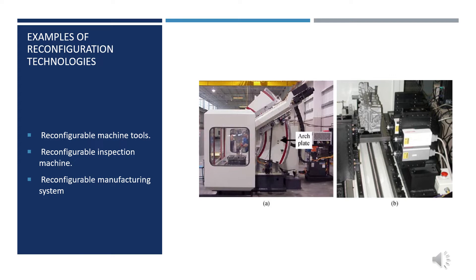Reconfigurable inspection machines (RMI) represent a class of in-process inspection machines that can be reconfigured to fit and inspect part geometry. The world's first patent on RMI was issued in 2003. In 2006, General Motors installed an RMI developed by ERC RMS at an engine plant in Flint, Michigan. The RMI utilizes machine vision to efficiently detect small surface holes less than 1 mm on engine blocks at line speed to inspect each part.